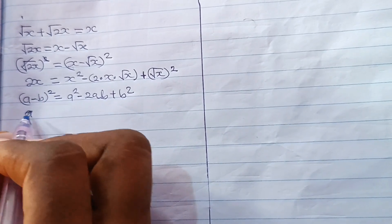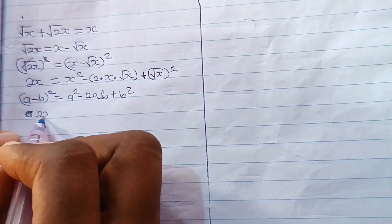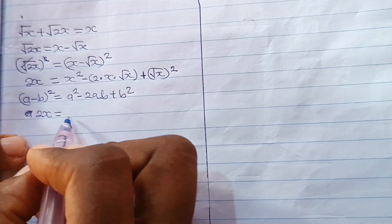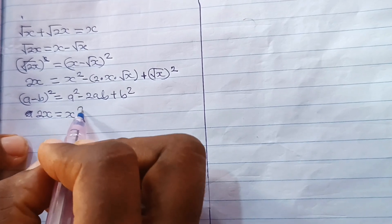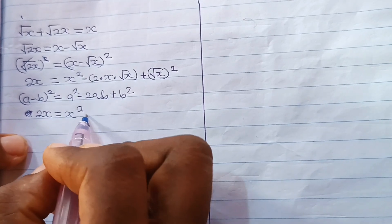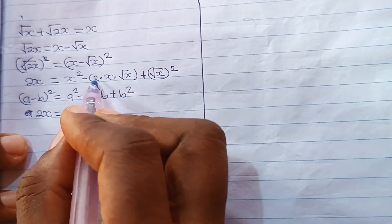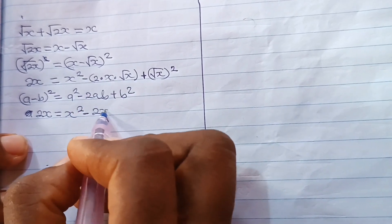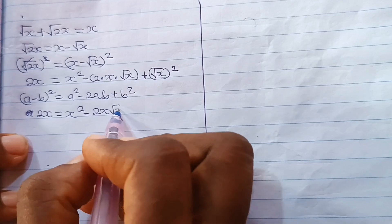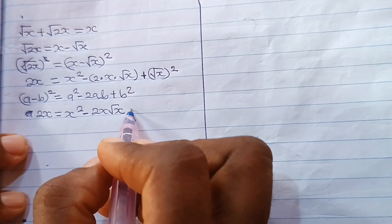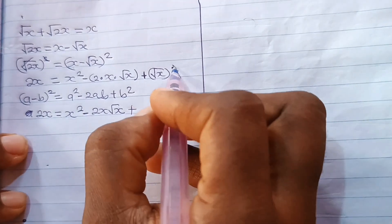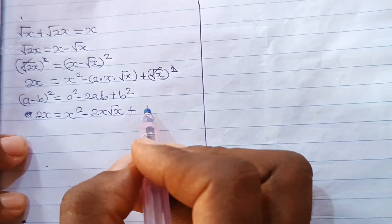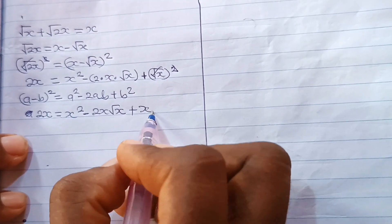So that means that 2x is equal to x squared minus 2 times x times root x, that gives us 2x root x. Then plus root x squared removes the root, and we have x remaining. So plus x.